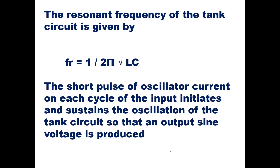The resonant frequency of the tank circuit is given by: FR = 1 / (2π√LC). The short pulse of collector current on each cycle of the input initiates and sustains the oscillations of the tank circuit, so that a sine voltage is produced at the output. The tank circuit acts as an oscillator, and the Class C pulse energizes it on each cycle.